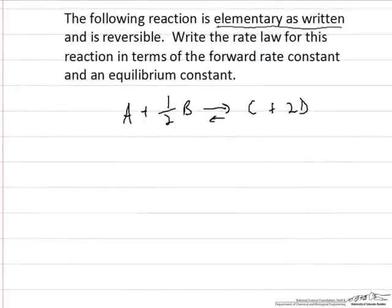This problem explores the concept of reactions that are elementary versus elementary as written. We'll talk a little bit about non-elementary reactions. In this example, we're supposed to take a reaction which is elementary as written and write the rate law in terms of the forward rate constant and some form of an equilibrium constant.